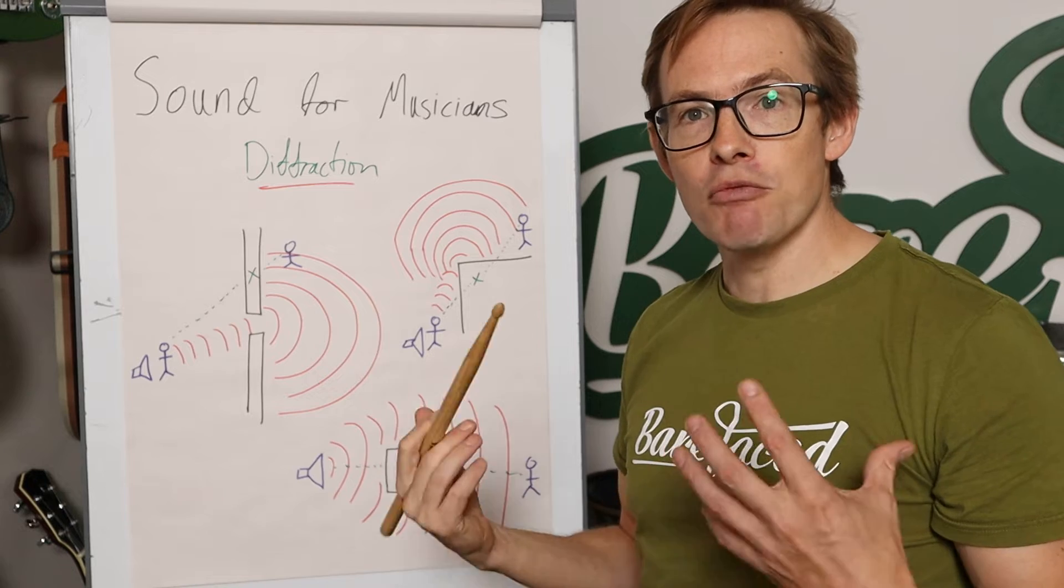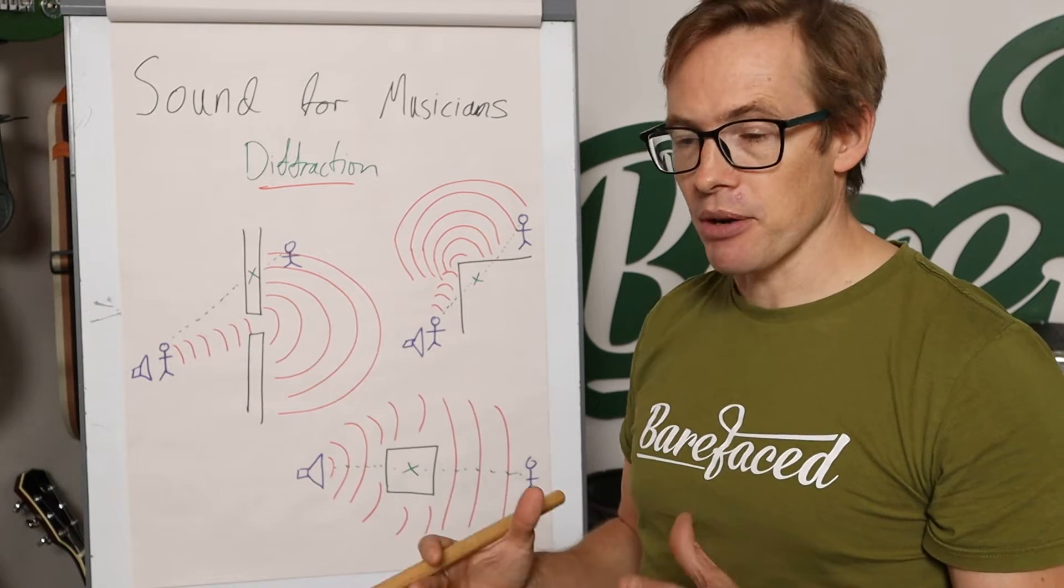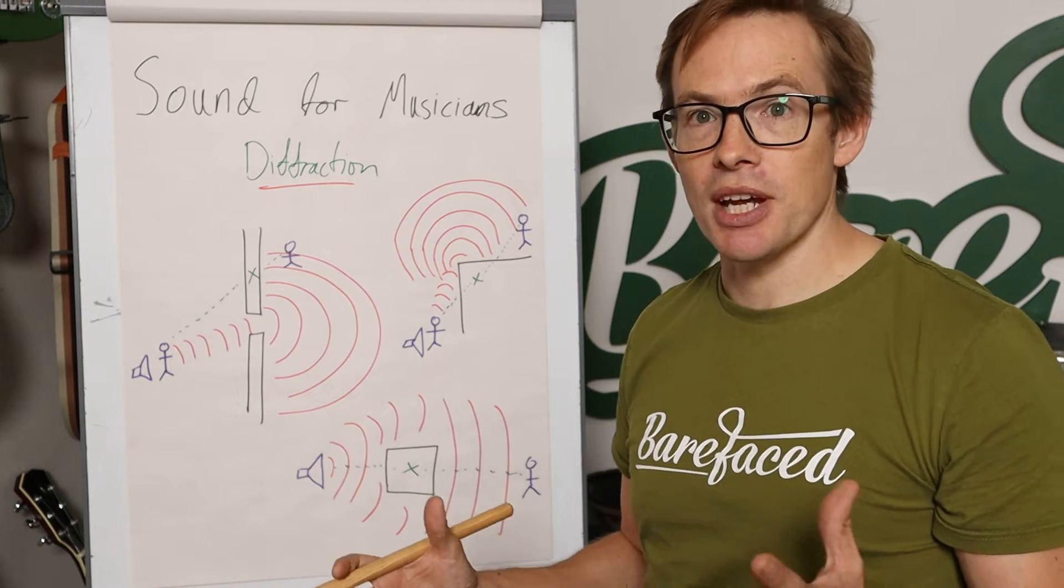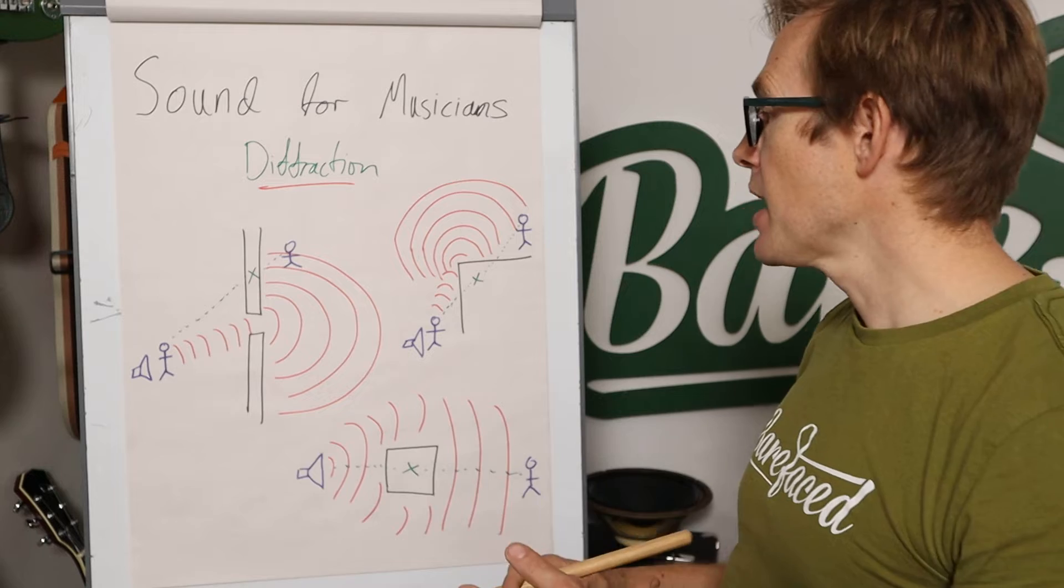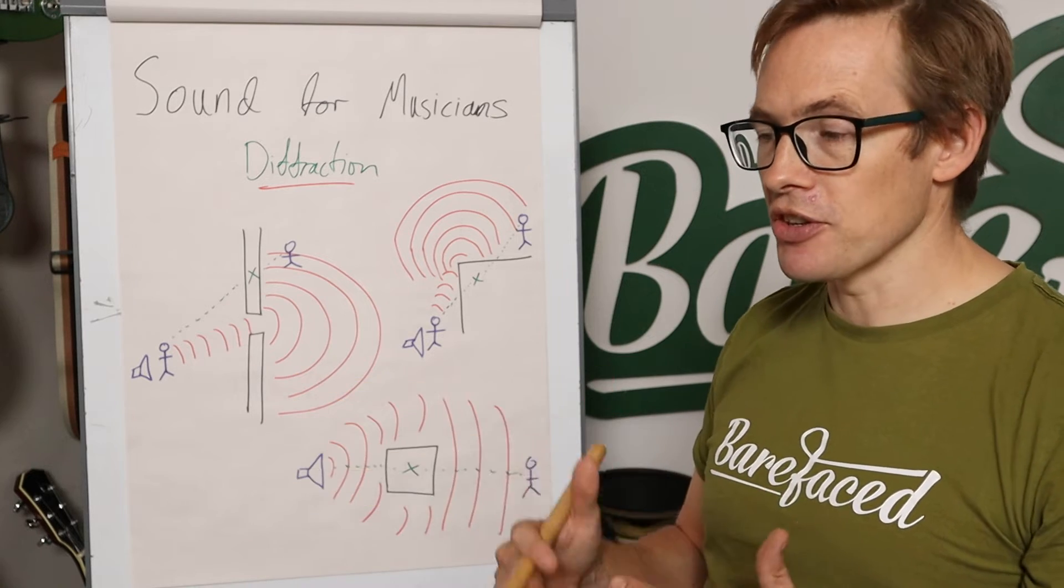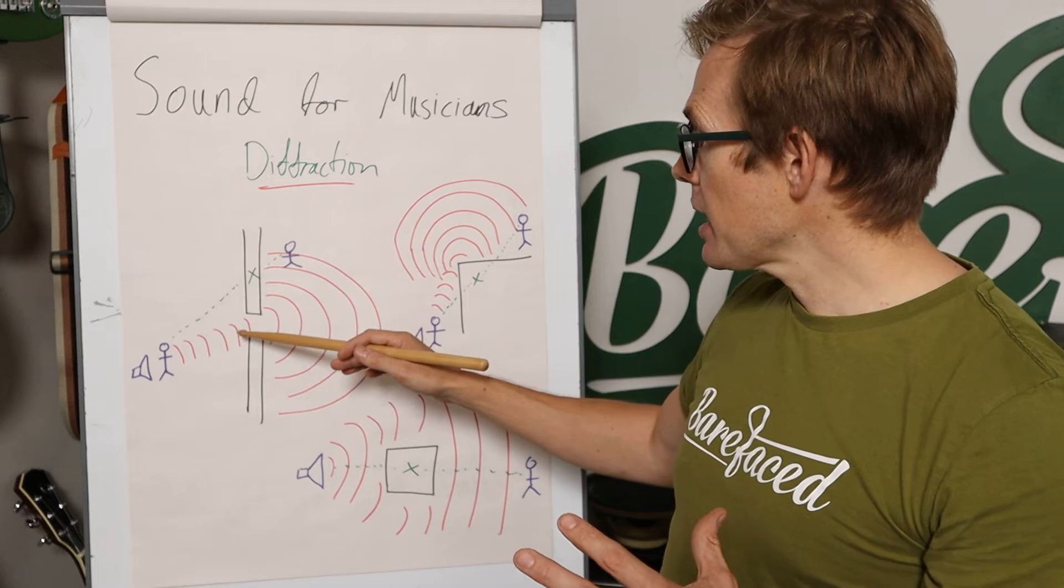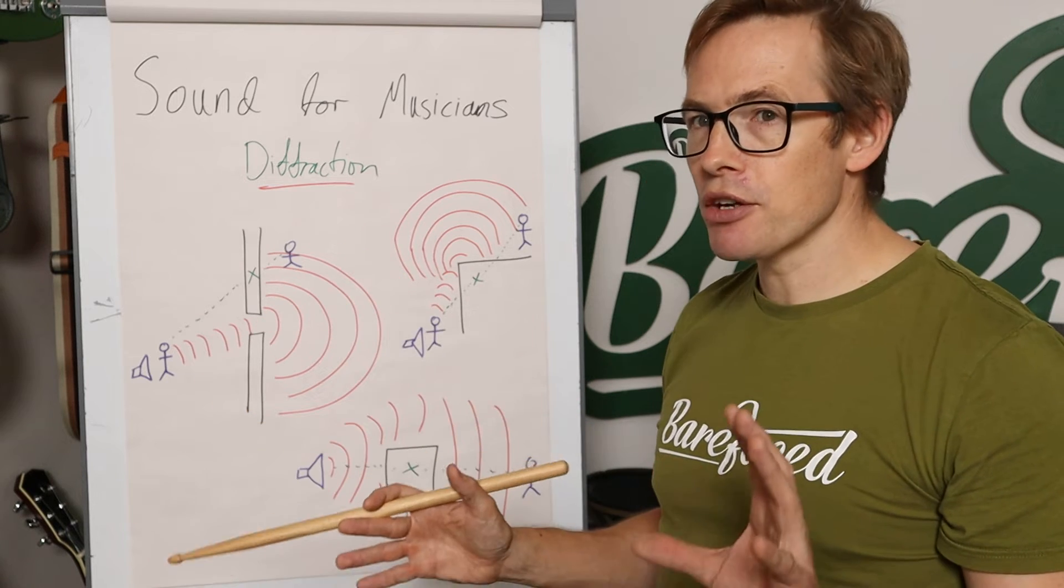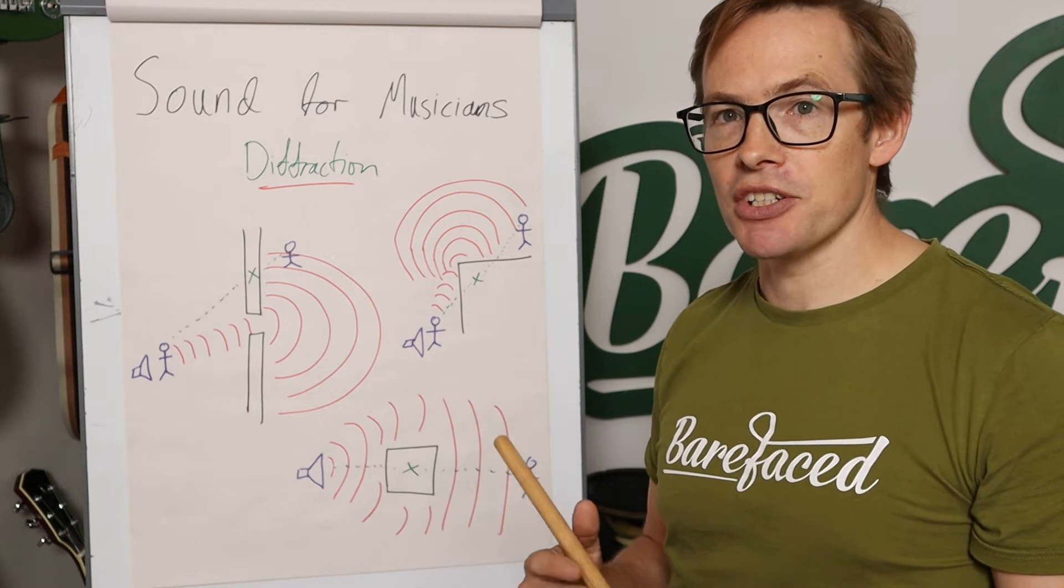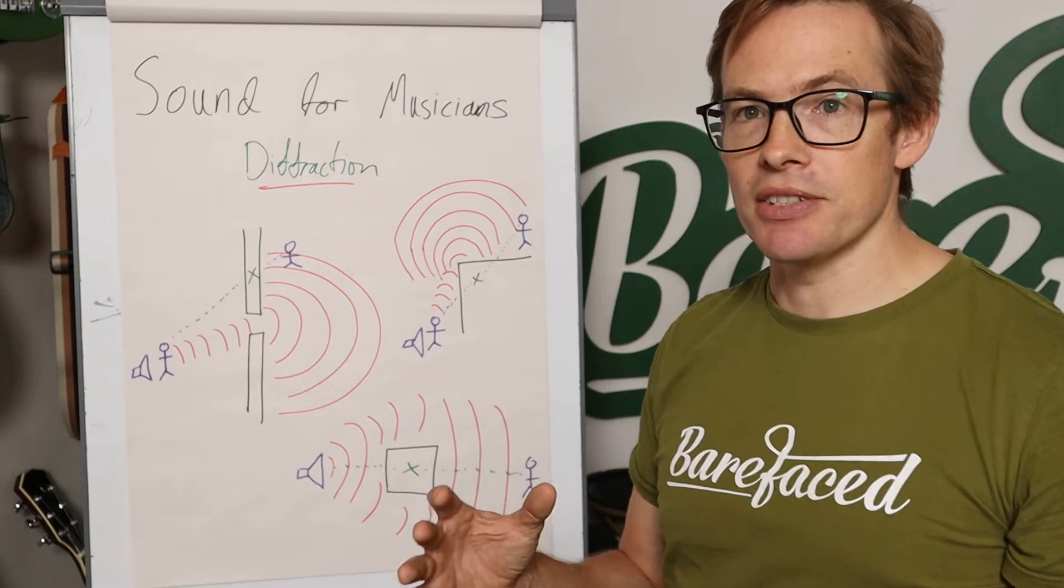Diffraction relates to the wavelength of the sound, or wavelengths of the sound, because most sound is made of many, many wavelengths. And the size of the slot, the size of the obstruction, the corner or whatever that it's going round, it is quite incredible how effective diffraction is at getting sound places.